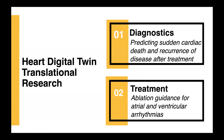I can divide our clinical translational research into two parts: diagnostics and treatment. In diagnostics, we mostly predict risks of sudden cardiac death, predicting stroke due to arrhythmias, and recurrence of disease after treatment. In the treatment part, we are mostly focused on treatment for heart rhythm disorders — specifically ablation guidance for atrial and ventricular arrhythmias.